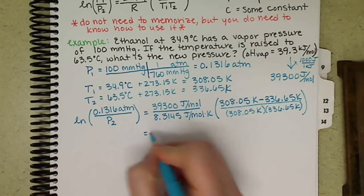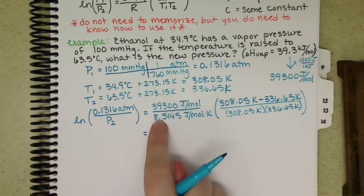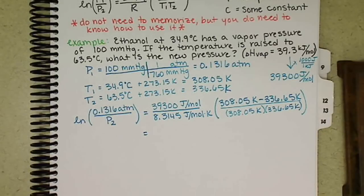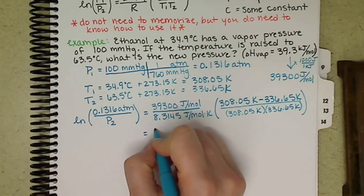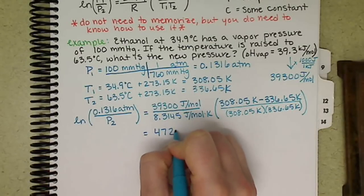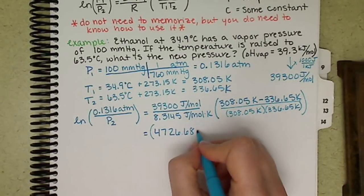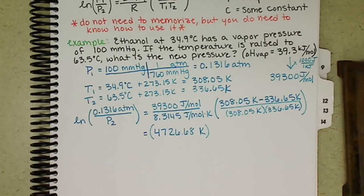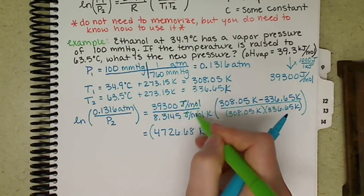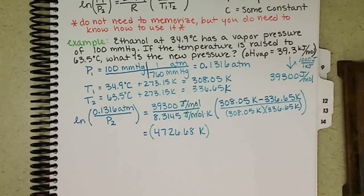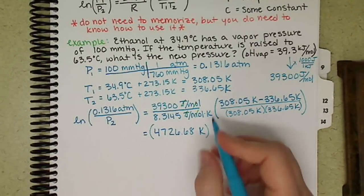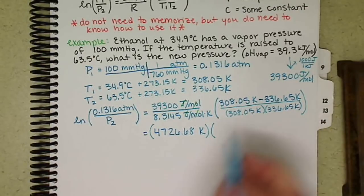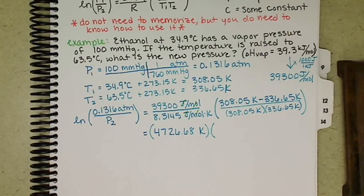So if I simplify my right side down, I take 39,300 divided by 8.3145, I end up with 4726. I'm going to keep a lot of sig figs. Unit wise, my joules and my moles cancel. Kelvin was in the denominator of the denominator, putting it in the numerator. Then my temperatures,